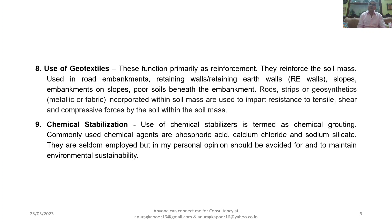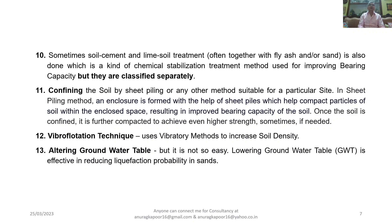Method 9 is chemical stabilization. The use of chemical stabilizers is termed chemical grouting. Commonly used chemical agents are phosphoric acid, calcium chloride, and sodium silicate. They are seldom employed and in my personal opinion should be avoided to maintain environmental sustainability. Method 10 is soil cement and lime soil treatment, often together with fly ash and/or sand, which is a type of chemical stabilization treatment used for improving bearing capacity but classified separately.